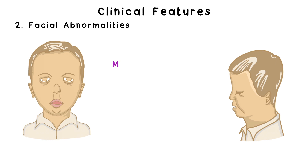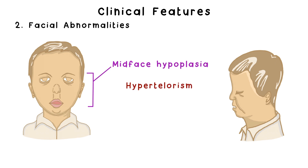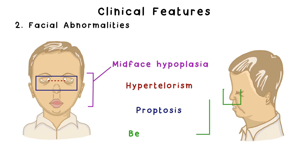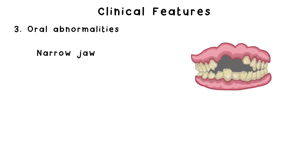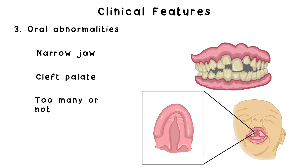Apert Syndrome also comes with some distinct facial abnormalities. There's mid-face hypoplasia, which is a sunken middle face; hypertelorism, or widely spaced eyes; proptosis, the abnormal protrusion of the eyes; and a beak nose. There can also be oral abnormalities, including a narrow jaw which leads to crowding of the teeth, cleft palate, and either too many or not enough teeth, to just name a few.